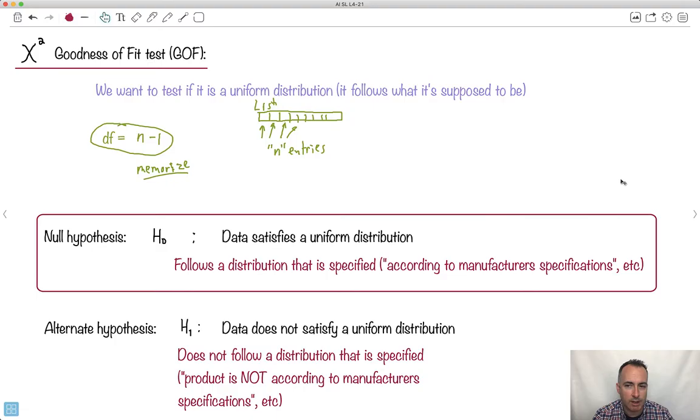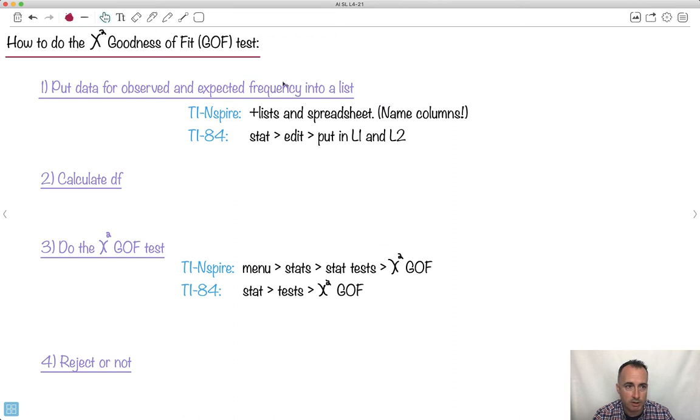Let me explain how to do it. This is going to tell us if they follow a uniform distribution, these lists here. First step, we put the data into observed and expected frequencies into a list. Do you notice it's a list, not a matrix?